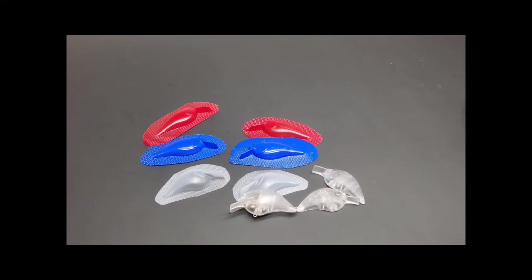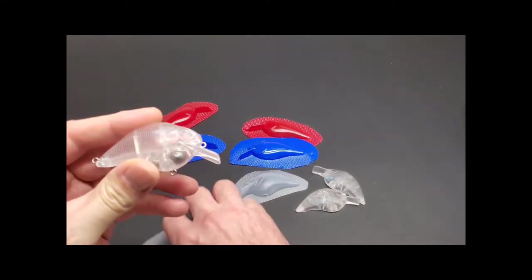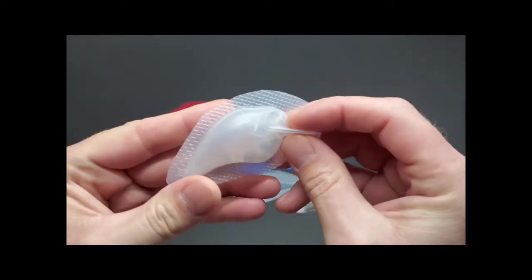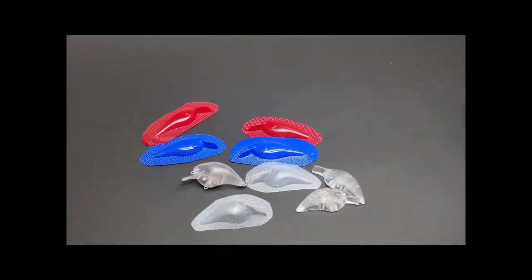Welcome back to the Blind Symmetry Lure Painting channel. In this video, I would like to demonstrate how I make 3D half-shell stencils for some of my lures. I'll set up another camera angle and we'll get started.